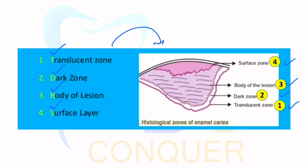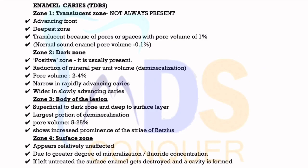Now let's go deeper into this concept — what happens in each zone and the significance of each zone from an entrance point of view. You can also write the same points for theory questions. Enamel caries zones are: Zone 1 – Translucent Zone, Zone 2 – Dark Zone, Zone 3 – Body of Lesion, Zone 4 – Surface Zone. Surface Zone is present outside, whereas Translucent Zone is present inside. Most caries starts from the surface, except few types.